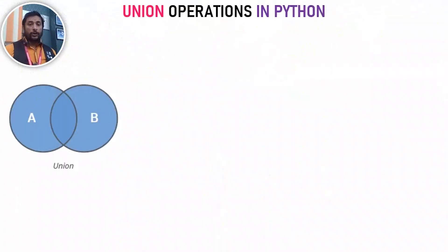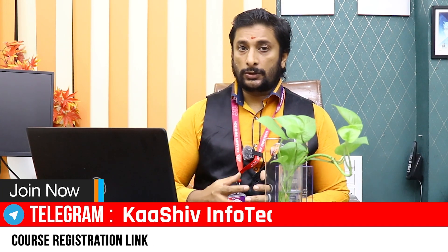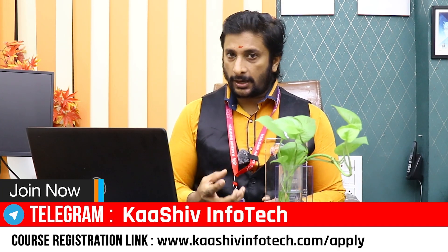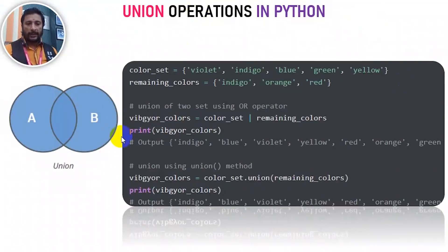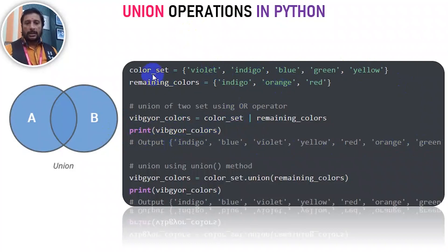Now we have the union operation in Python. We have set operations for sets. The union operator uses the single pipe symbol |. For example: color_set | remaining_color gives you the union output. You can also use the union() method: color_set.union(remaining_color).